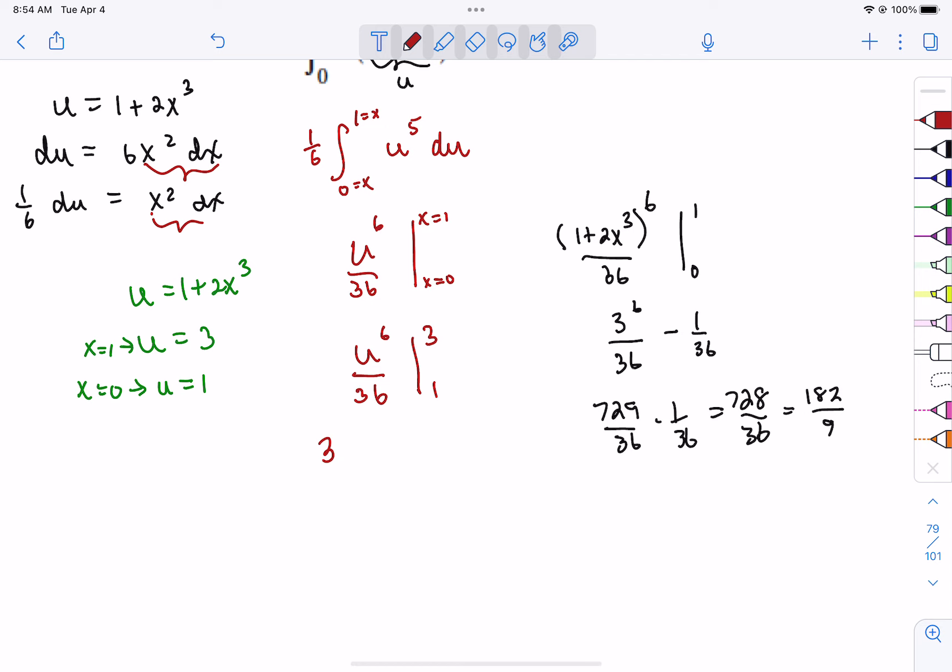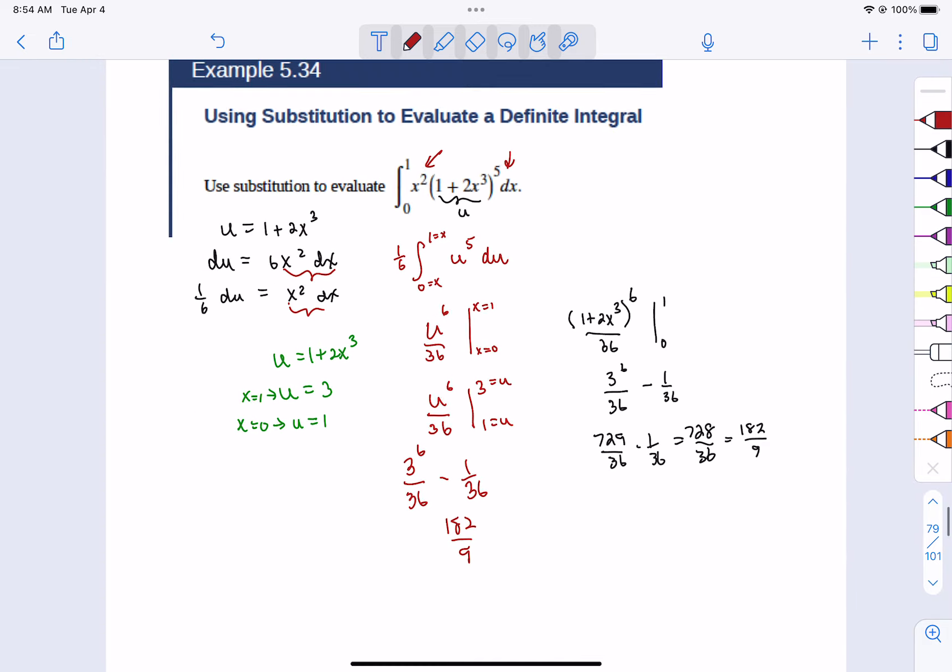So it happens either way. So that's 3⁶ over 36 minus 1 over 36, which is 182 over 9. You get the same answer both ways. So if you change the boundaries, then make them u's and then plug in, or keep them x's and plug in anyway, you're going to get the same answer both directions. But I wanted you to see, you can change your boundaries because you can make them u's, or you can put the x's in and then plug in the boundaries that were already given to the x's. Sometimes changing them to u's, it feels easier.